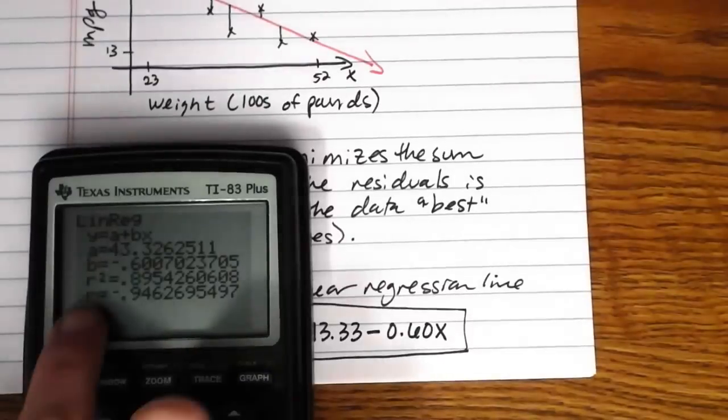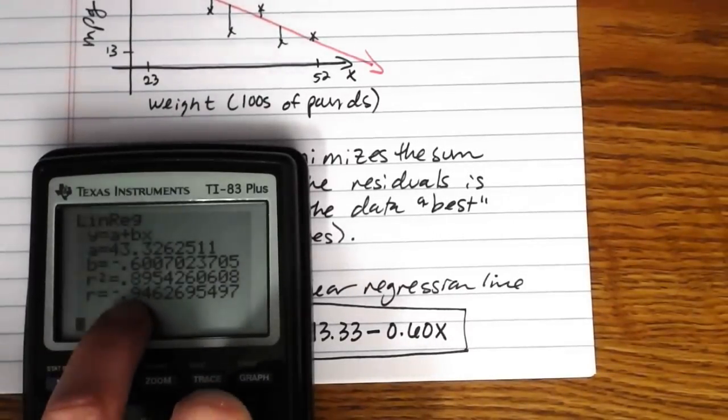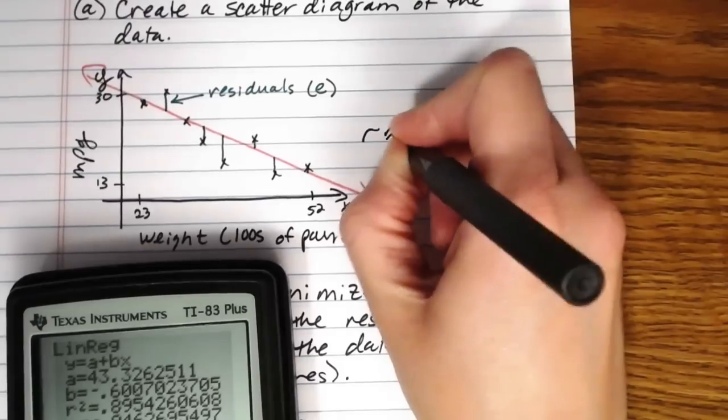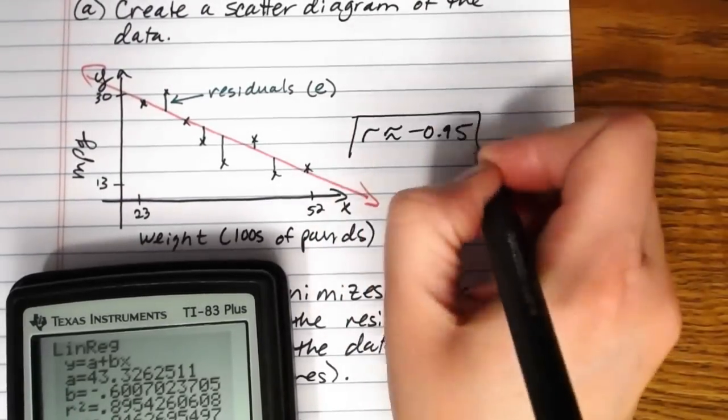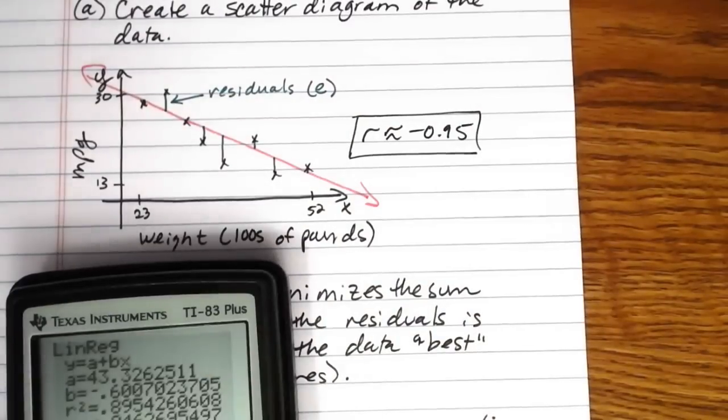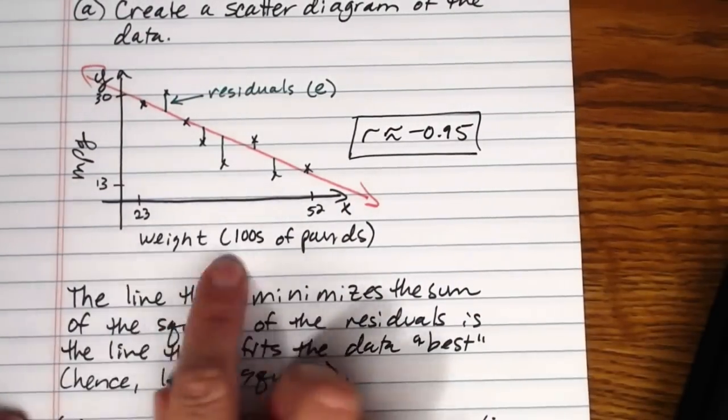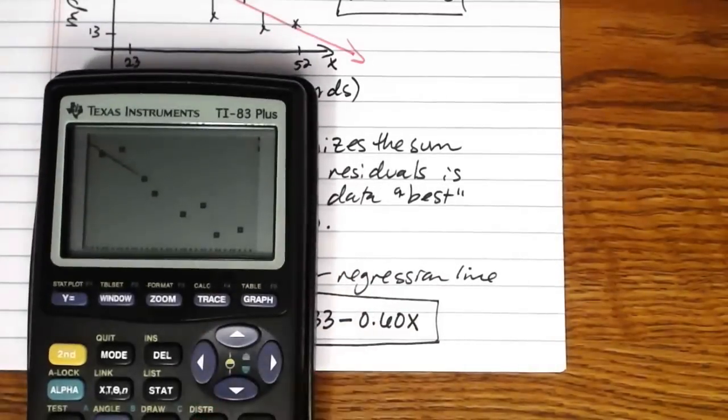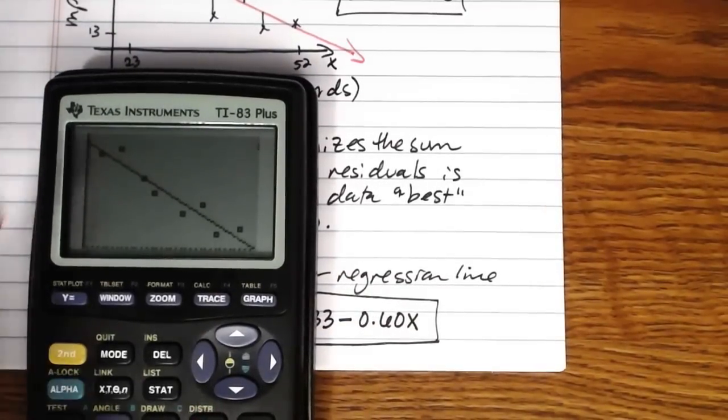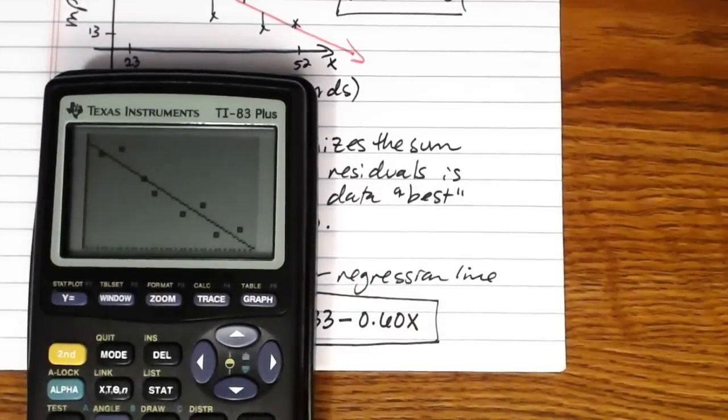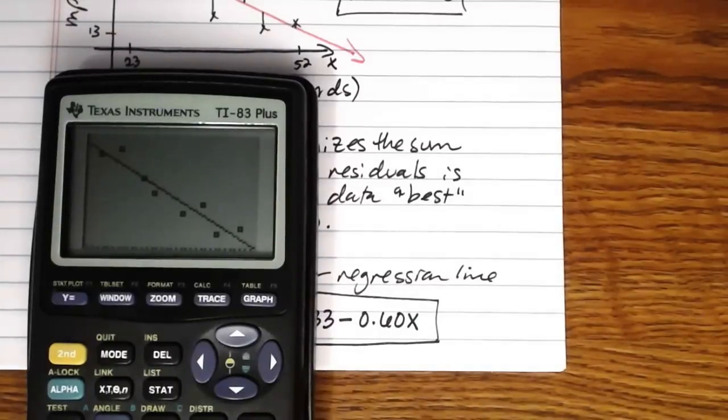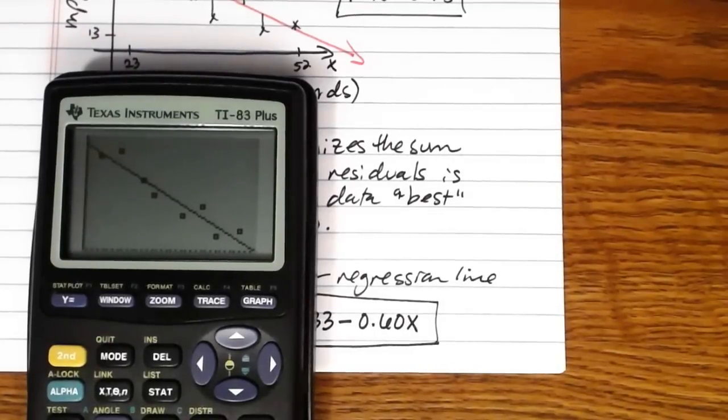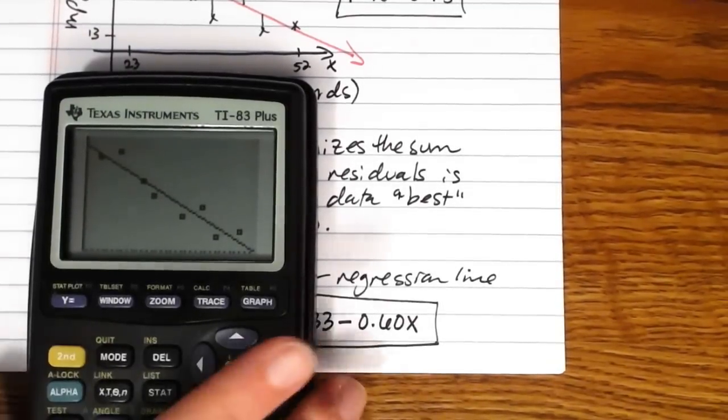And also you can see here our r value, our correlation coefficient, is about negative 0.95. So we can see that there is a strong negative linear relationship between weight of a car and miles per gallon. Now if we go back to the graph, because we put that Y1 in there, it will superimpose the graph on here for us and we can see what a nice job it's done of drawing in there. So that's how we calculate the line of best fit.